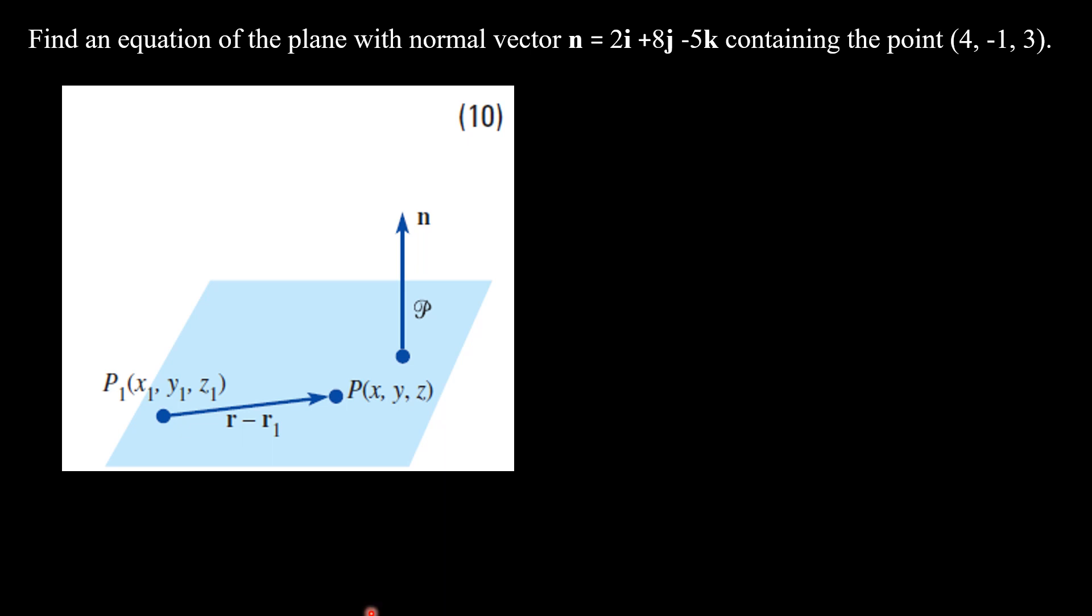So if you guys want to visualize it, this is the plane. And here there is a normal vector which is perpendicular to the plane. And here there are two points, P1 and P2.